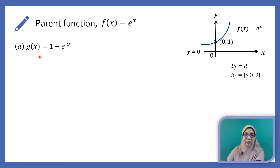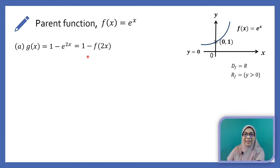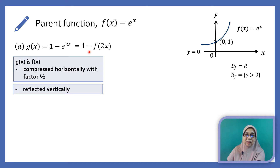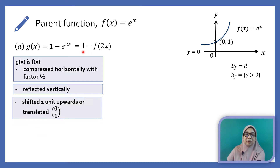We are going to graph the function g(x) equals 1 minus e to the power of 2x. How is g(x) related to f(x)? We can rewrite g(x) as 1 minus f(2x). The 2x indicates that we need to compress the graph horizontally with factor half. The negative in front of f means we reflect the graph vertically. The 1 means we shift the graph 1 unit upwards, or carry out a translation of (0, 1).